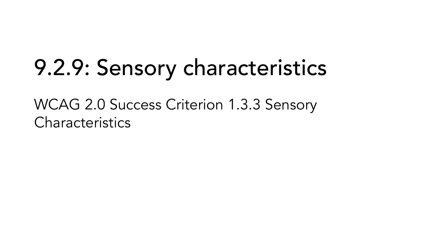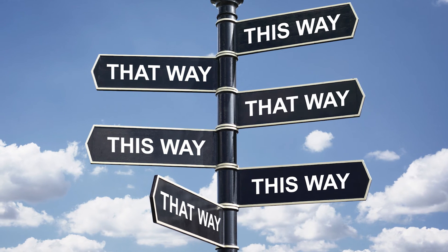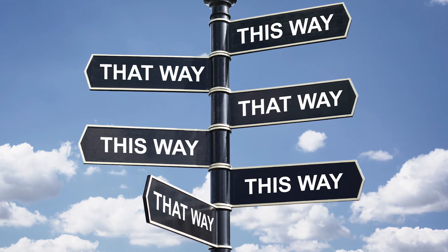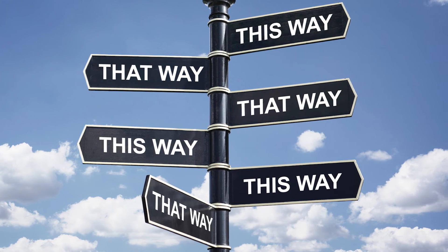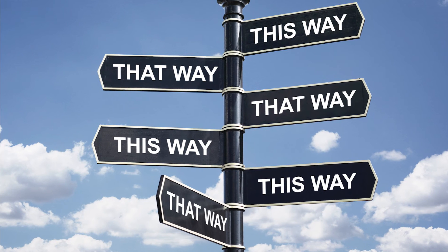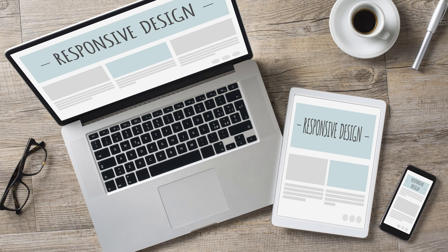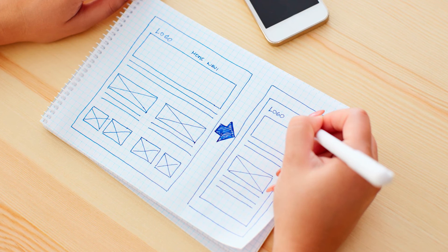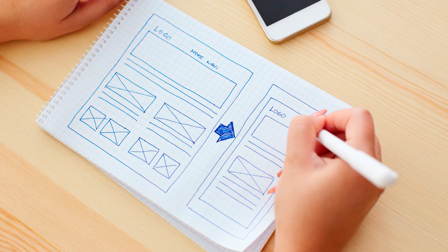9.2.9, Sensory Characteristics, is based on WCAG 2.0 success criterion 1.3.3. When giving instructions to the user, you should not rely on sensory characteristics alone. A sensory characteristic could be, for example, 'see the link to the left,' and this is not enough. Instead, use something more than just sensory characteristics, like 'follow the link after the heading so-and-so, to the left.' Sensory characteristics are not only visual location — it can also be color, shape, size, orientation, or sound. If you are sure that the sensory characteristics are the same for all users and situations, you might use it together with something structural. But remember that different user agents and assistive technology may change orientation, placement, and presentation.